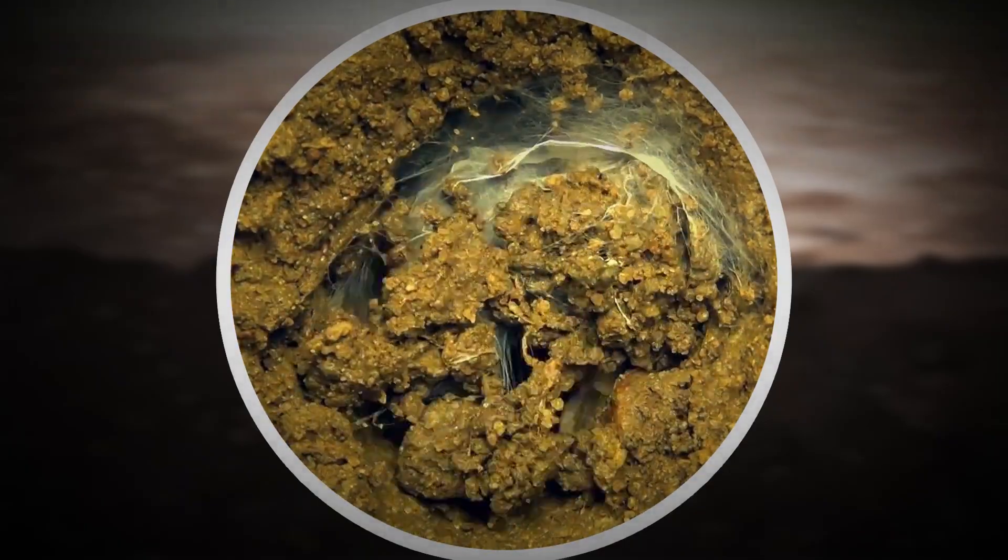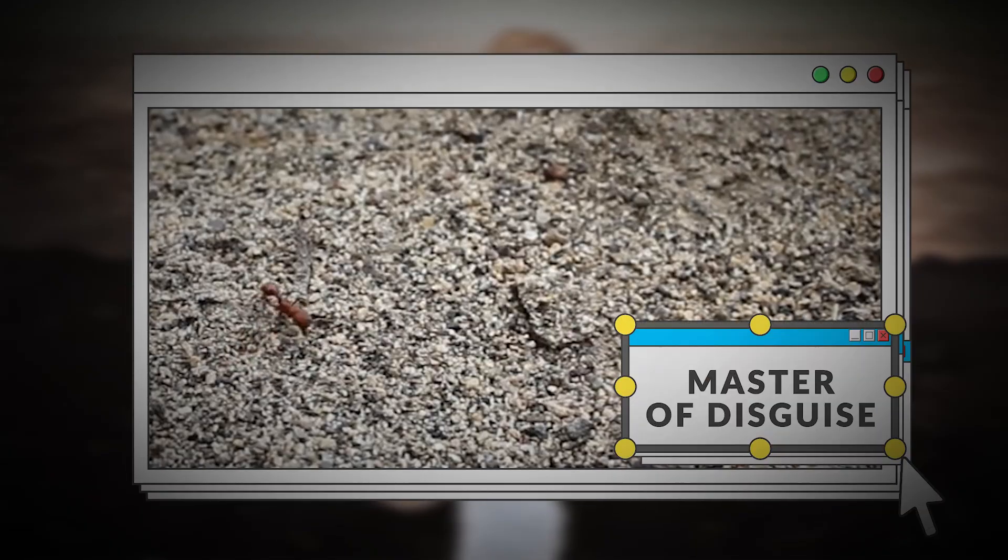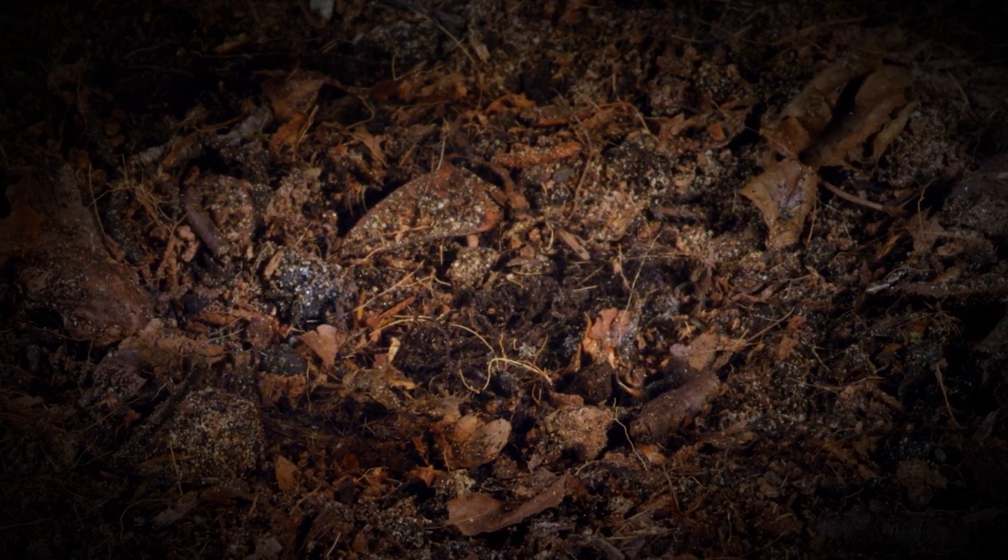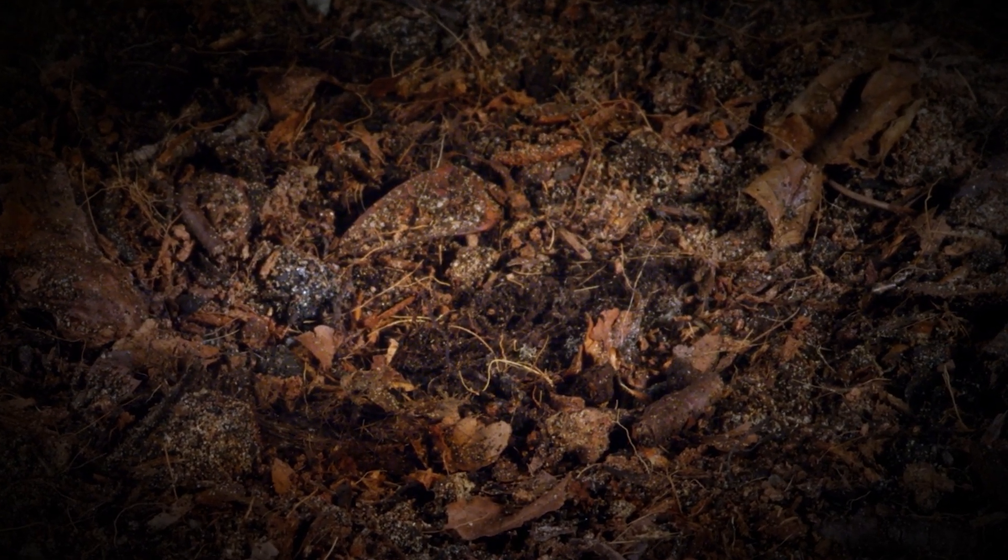Here's the coolest part. The trapdoor spider is a master of disguise. It covers the top of its burrow with leaves, twigs, and other debris to make it blend in with its surroundings. This makes it nearly impossible for prey to spot the spider lurking inside, waiting to strike.